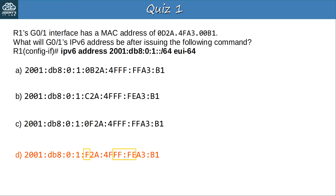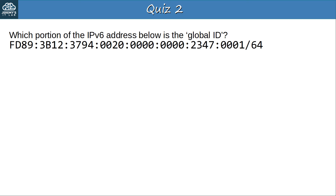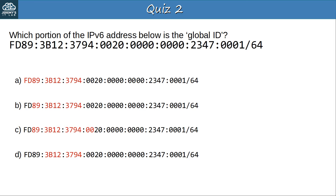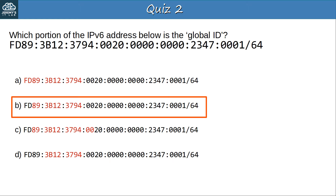Question 2: Which portion of the IPv6 address below is the global ID? The correct answer is B. This is a unique local IPv6 address. After FD, the next 40 bits — 10 hexadecimal characters — form the global ID. This portion of the address should be randomly generated so that subnets don't overlap in the case that two companies merge.